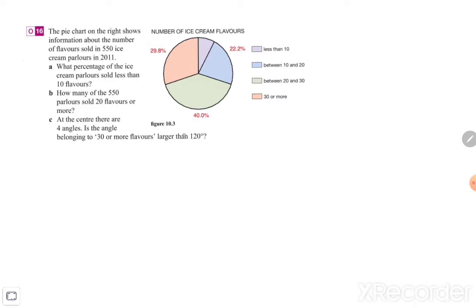So in exercise a, to calculate that part we need to do 100 percent minus 29.8 minus 40.0 and minus 22.2 percent, which is equal to 8.0 percent. All right, so that's exercise a. In b...